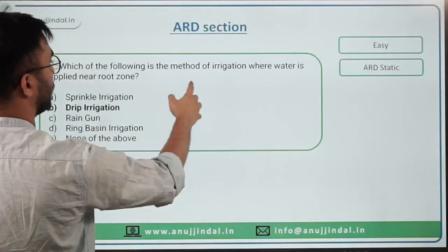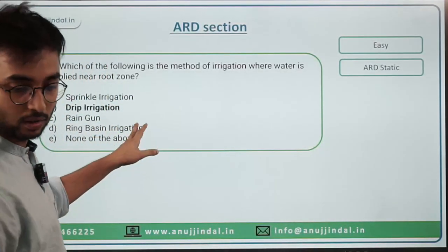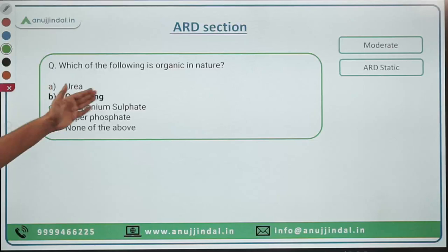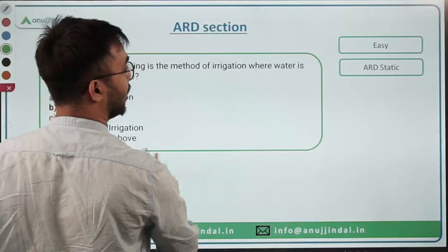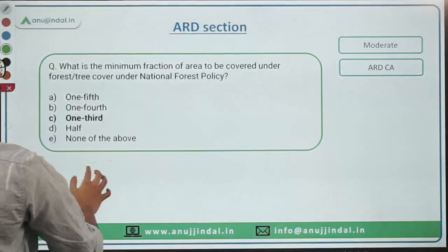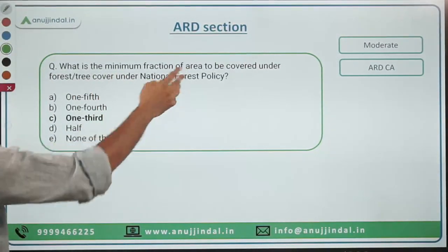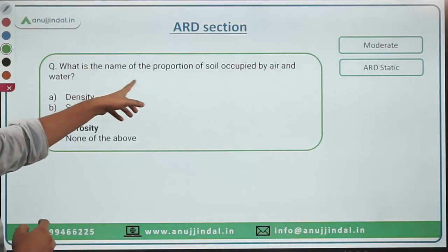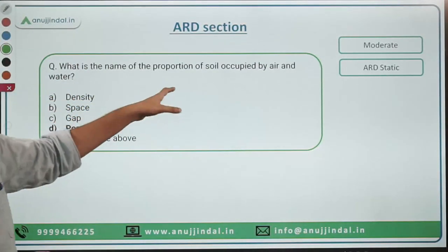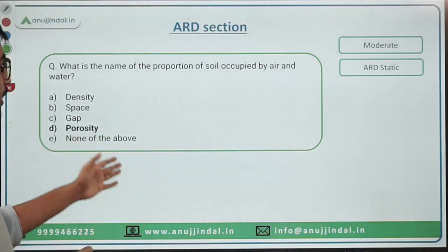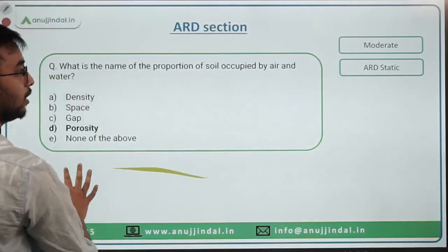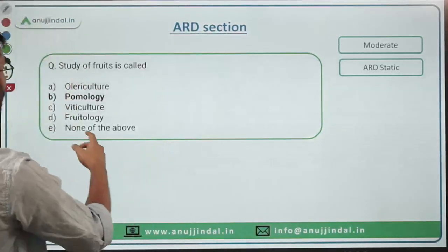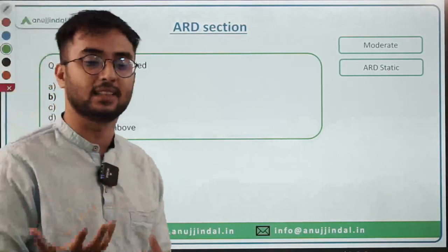'Which method of irrigation applies water near the root?' — This is Drip Irrigation. 'Which of the following is organic in nature?' — Urea is chemical, Ammonium Sulfate is chemical, Superphosphate is chemical, Cow Dung is organic — a very easy question. 'How much forest is prescribed in National Forest Policy?' — One-third, i.e., 33.33%. 'The proportion of soil occupied by air and water' — This is the definition of Porosity.